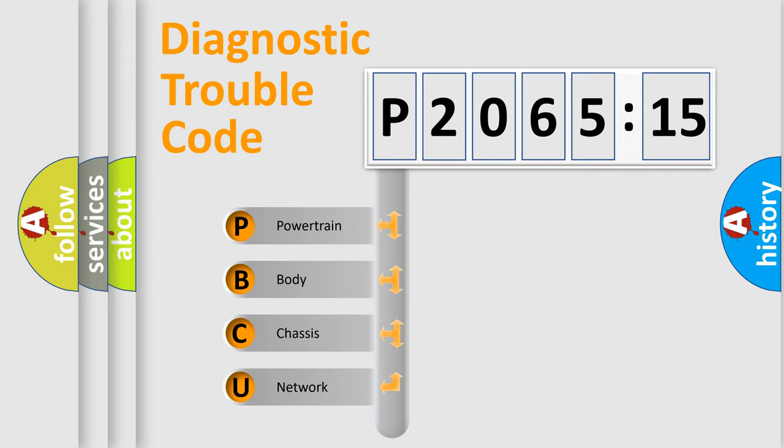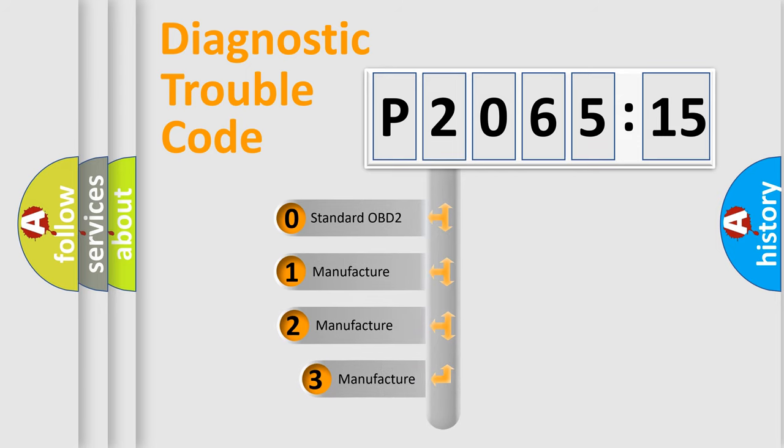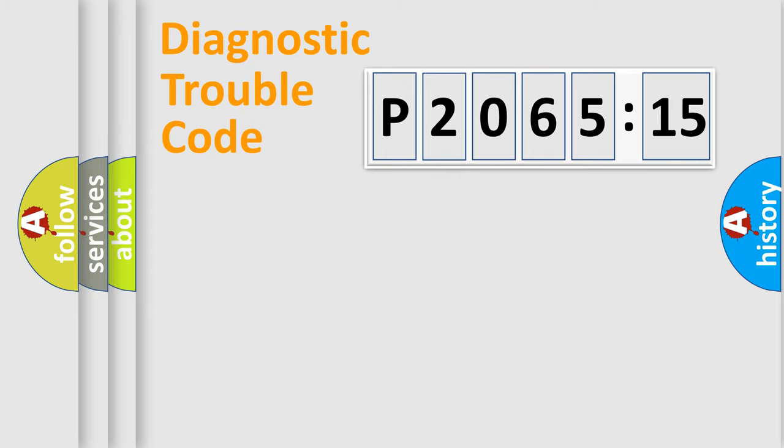If the second character is expressed as zero, it is a standardized error. In the case of numbers 1, 2, or 3, it is a manufacturer-specific error. The third character specifies a subset of errors. The distribution shown is valid only for the standardized DTC code. Only the last two characters define the specific fault of the group.